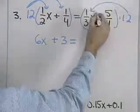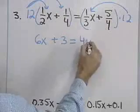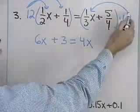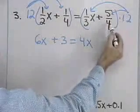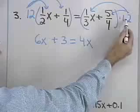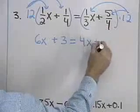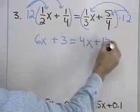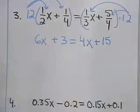12 times 1 half times x is 6x. 12 times 1 fourth will be 3. 12 times 1 third x will be 4x. And then 12 times 5 fourths — 4 will divide into 12 three times, times 5 is 15 — so 5 fourths times 12 is going to be 15.